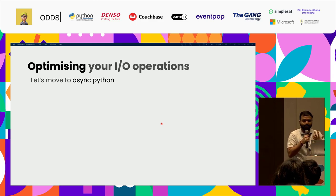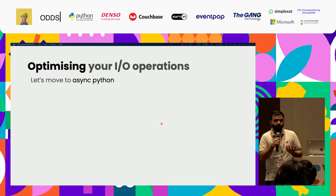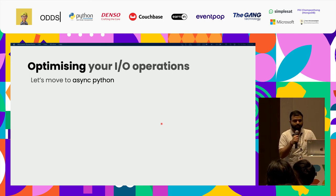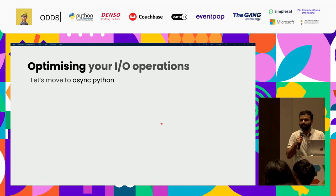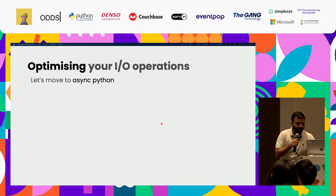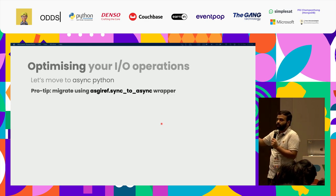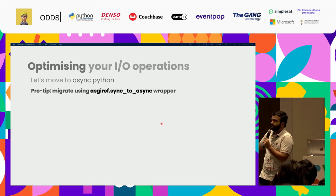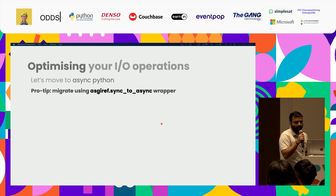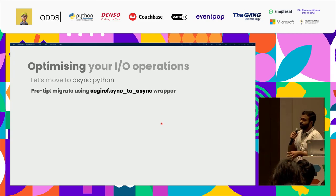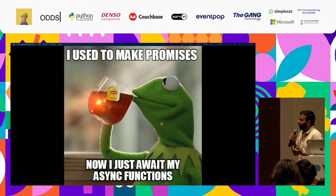The next optimization is IO operations. We moved from synchronous Python to asynchronous Python because we had a lot of blocking operations. Async was best suited for us. During migration, for external libraries without async support, we used asgiref's sync_to_async wrapper, which converts synchronous code so we can define async functions from synchronous ones.